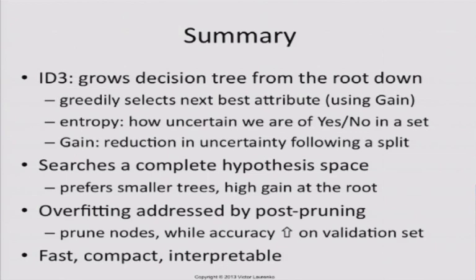Decision trees have a complete hypothesis space — they enumerate over the power set of all attributes and attribute values, so they can always separate the data. They have a preference for putting high-gain attributes at the top, which creates a bias toward selecting attributes with lots of values resulting in lots of tiny subsets. Overall, decision trees are fast, don't take much memory, and you can actually explain what the model means.